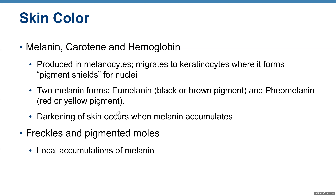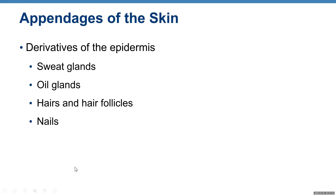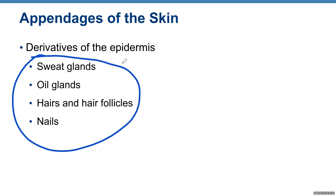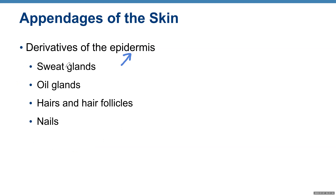Darkening of skin occurs when melanin accumulates; freckles and pigmented moles are caused by local accumulation of melanin. Appendages of the skin include sweat glands, oil glands, hair and hair follicles, and nails — all derivatives of the epidermis. You will find these structures inside the dermis, but they are made of epidermis.